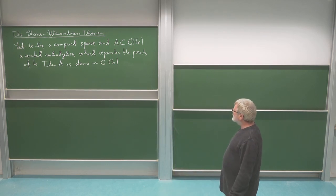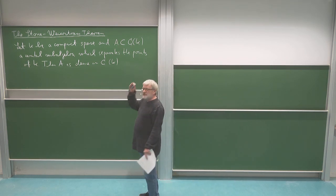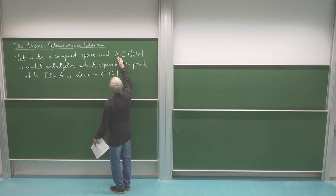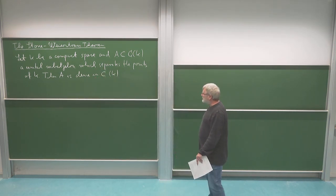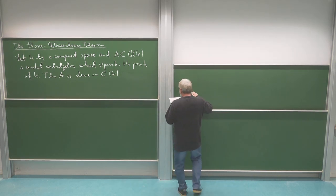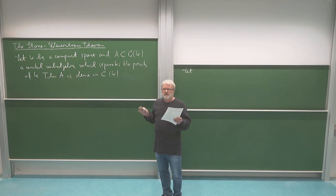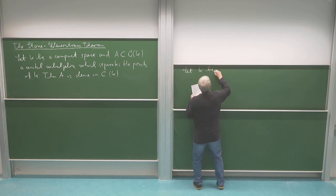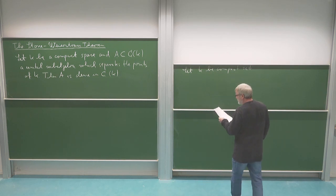Now we know everything about what a compact set is. We can look at continuous functions on this compact set and try to find conditions on subsets which guarantee denseness. I should tell you what I mean by a unital sub-algebra and in particular what I mean by 'separates points.' The setting is: we consider K a compact set, possibly in a very general topological setting.